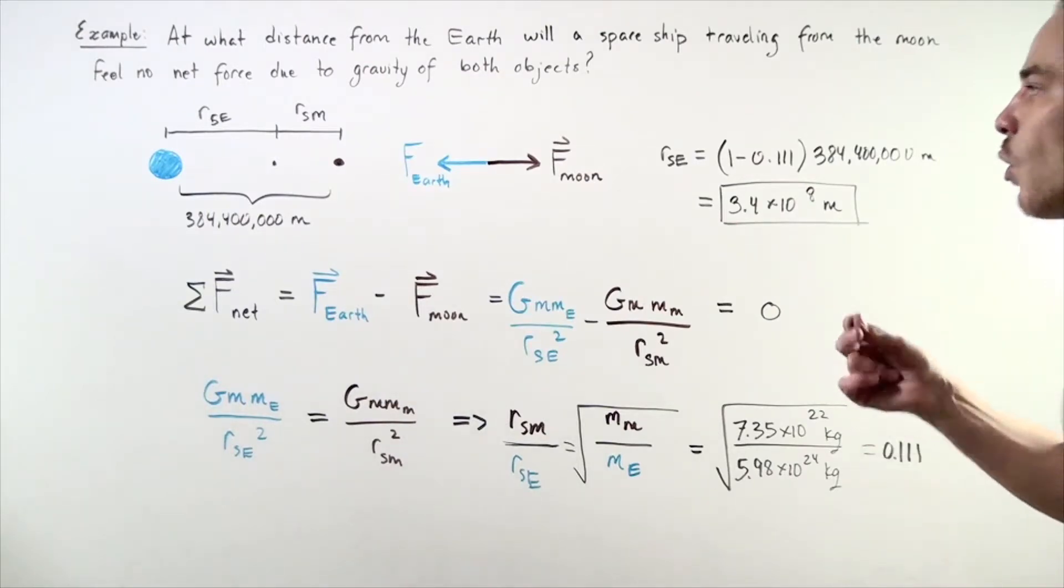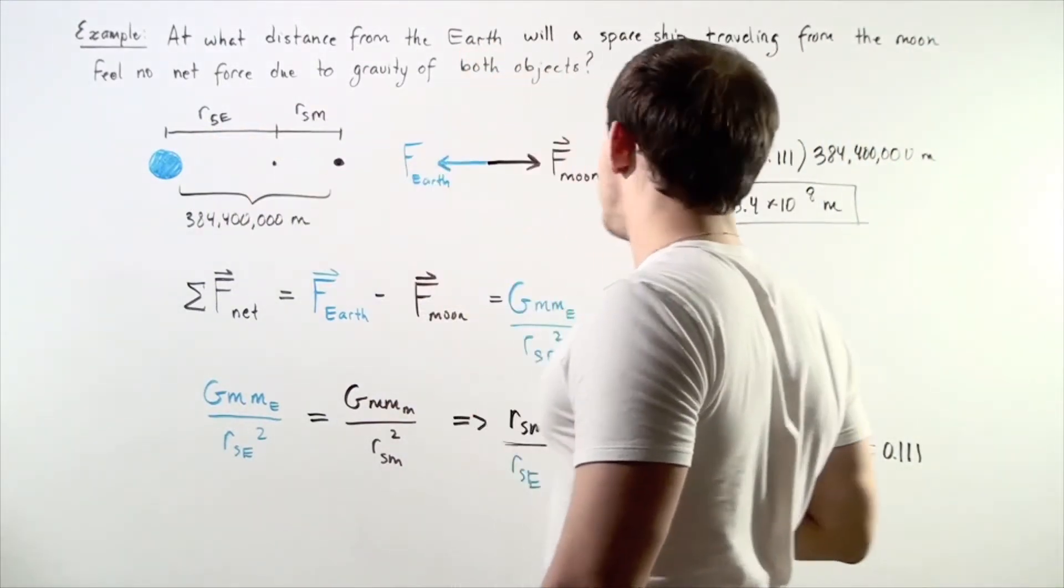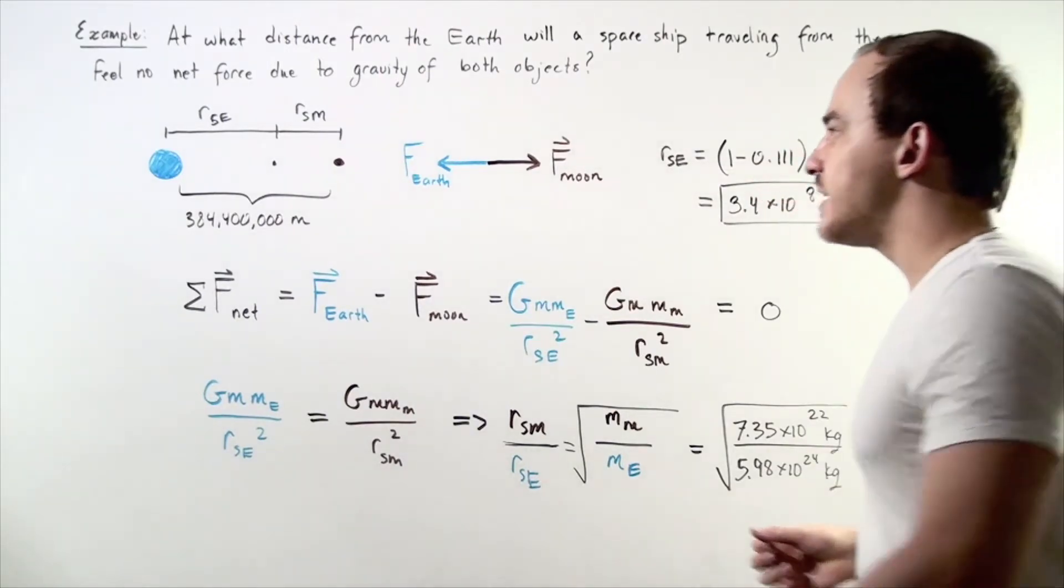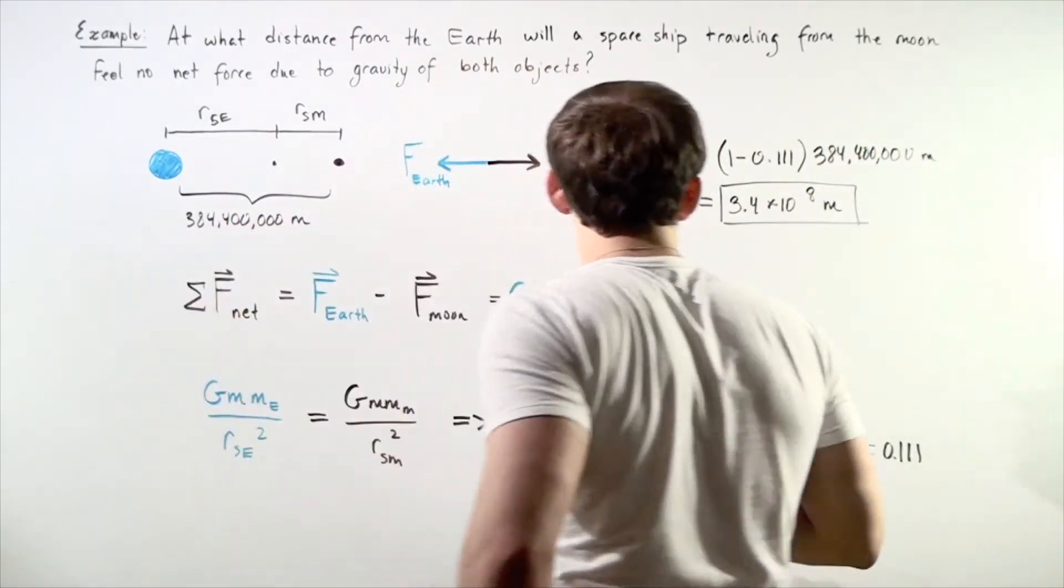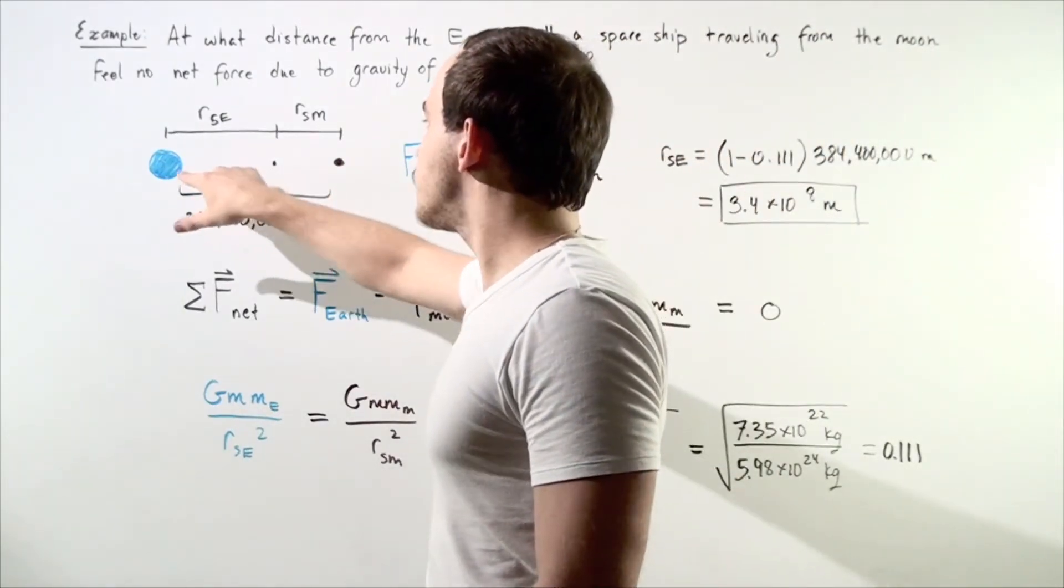That means, in order to get the other ratio, this ratio to this ratio, we simply subtract this number from 1. So 1 minus 0.111 multiplied by this entire distance gives us the distance from our spacecraft to the Moon, and it's approximately 3.4 times 10 to the 8 meters.